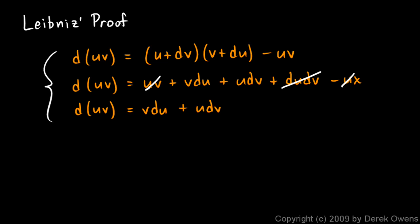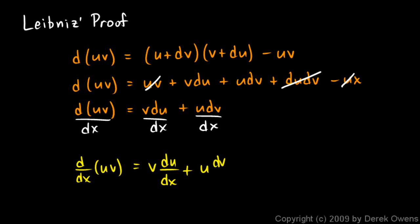And I think it's interesting to note that if we take Leibniz's formula right down here, and we just divide both sides by dx. So if I put a divide by dx on the left and on the right, what we're left with is the derivative with respect to x of uv is equal to v times du dx plus u times dv dx.